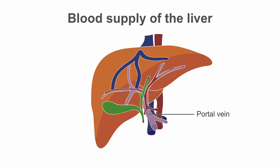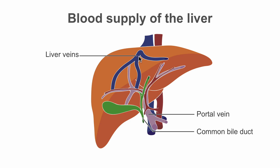The portal vein enters the liver here. We see the common bile duct leaving the liver. We see the liver veins draining blood from the liver, and the hepatic artery brings oxygenated blood into the liver. The vessel structures here at the liver hilum are sheathed by peritoneal tissue, forming the hepatoduodenal ligament.